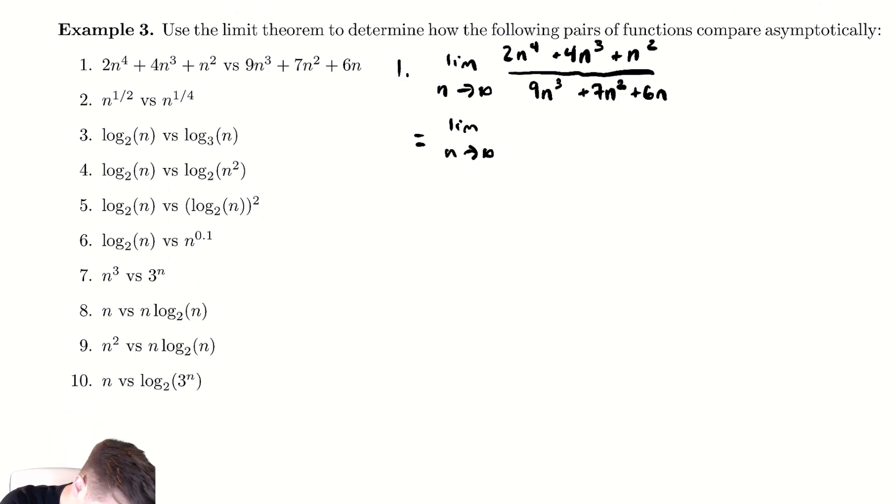So this equals the limit as n goes to infinity of dividing every single term in the fraction by the highest power in the denominator. That's the same as multiplying by one and therefore does not change the fraction. If I divide 2n to the fourth by n cubed I get 2n plus dividing this by n cubed 4n cubed I get 4 plus divide n squared by n cubed and I have 1 over n all divided by dividing everything in the denominator by n cubed and we have 9 plus 7n squared over n cubed gives me 7 over n plus 6n over n cubed gives me 6 over n squared. Now we have a convenient property which is that anything divided by a power of n like 1 over n, 7 over n and 6 over n squared those all go to 0 as n goes to infinity. You're making the denominator infinitely large and therefore the original quantity becomes infinitesimally small.